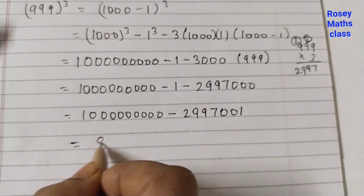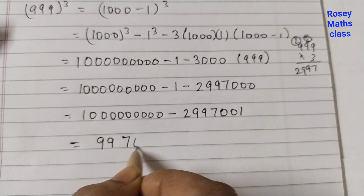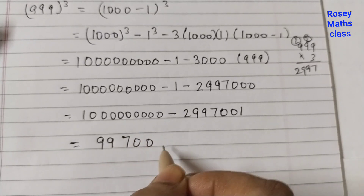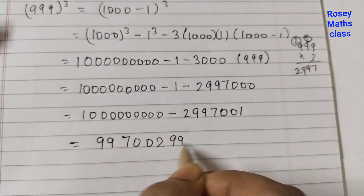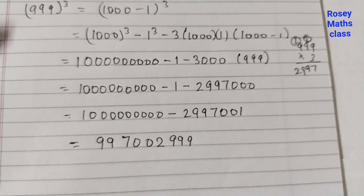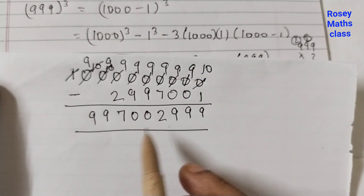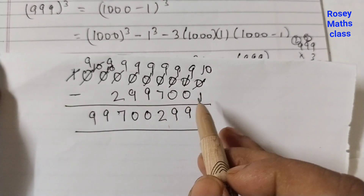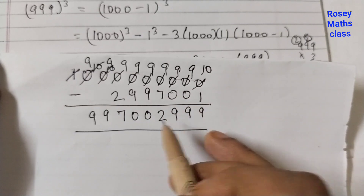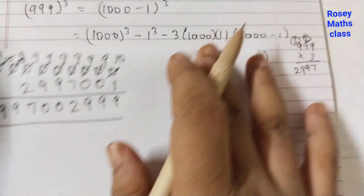The answer is 997,002,999. Most students find this difficult, but once you know the rule, it is very easy.